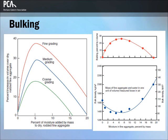Bulking is the increase in total volume of moist fine aggregate over the same mass in a dry condition. Surface tension in the moisture holds the particles apart, causing an increase in volume. The figure on the left illustrates how the amount of bulking of fine aggregate varies with moisture content and grading. Fine gradings bulk more than coarse gradings for a given amount of moisture.